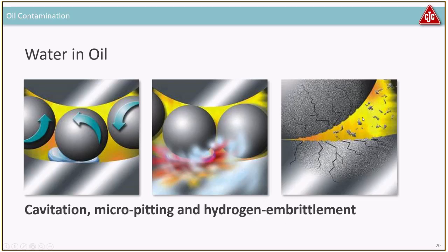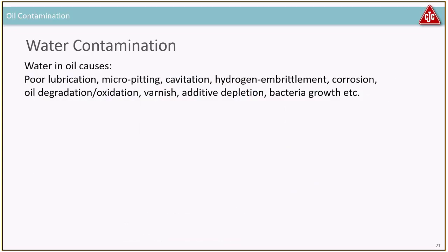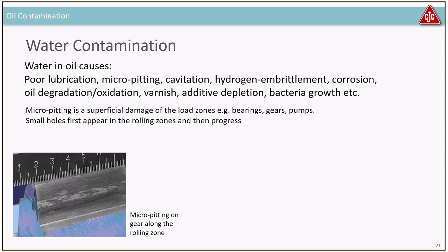Hydrogen embrittlement is another issue: water is H₂O, and when hydrogen migrates into the steel it becomes brittle like glass. A gear tooth under shock load can break because it's so brittle — gear teeth need to be ductile, not brittle. Water will also cause corrosion, speed up oil degradation and oxidation, and deplete additives. Many additives are polar and can be washed out by water — ZDDP, for example, can be destroyed by water. You can also create bacterial growth if there's enough water.